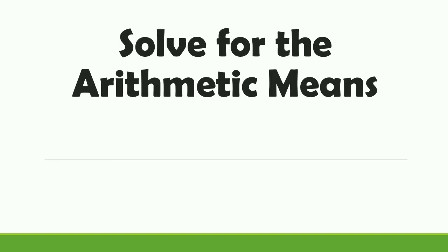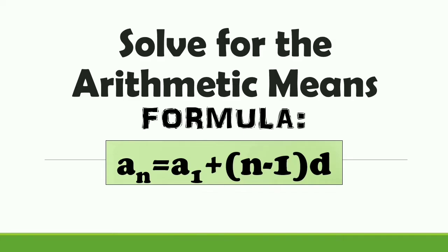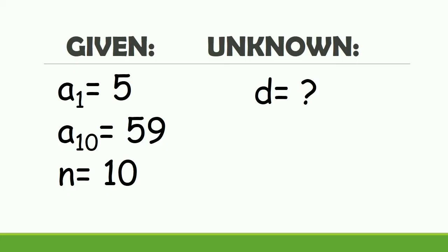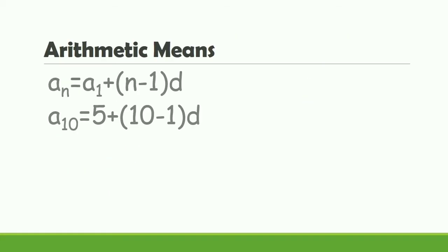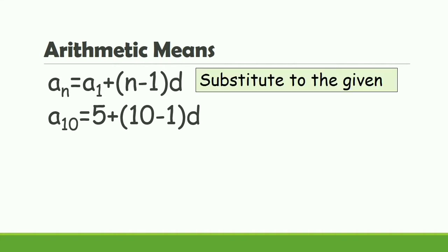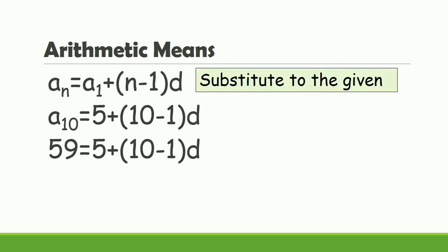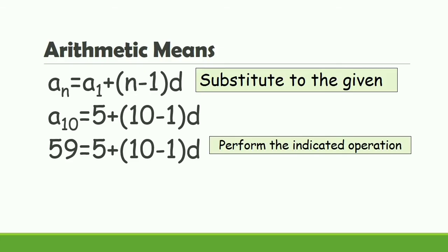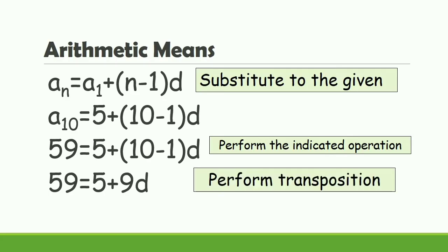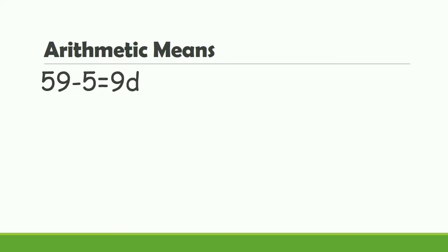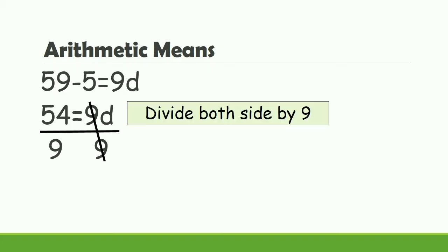Let's now solve for the arithmetic means. But before that, let's solve again for the common difference using the formula a sub n is equal to a sub 1 plus n minus 1 times d. Given: a sub 1 is equal to 5, a sub 10 is equal to 59, n is equal to 10, and d is the unknown. Substituting: 59 is equal to 5 plus 10 minus 1 times d. Performing the operation: 10 minus 1 is 9, so 9d equals 54. Transposing: 59 minus 5 is 54; dividing both sides by 9 gives 54 divided by 9 equals 6. Therefore, the common difference is 6.